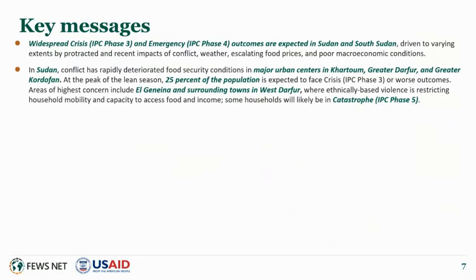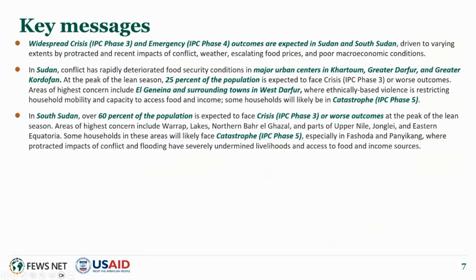Areas of highest concern include El Janina and surrounding towns in West Darfur, where ethnically based violence is restricting household mobility and capacity to access food and income. Some households will likely be in catastrophe IPC phase 5. In South Sudan, over 60 percent of the population is expected to face crisis IPC phase 3 or worse outcomes at the peak of the lean season. Areas of highest concern in emergency IPC phase 4 include Warrap, Lakes, Northern Bargazal, and parts of Upper Nile, Jonglei, and Eastern Equatoria. Some households in these areas will likely face catastrophe IPC phase 5, especially in Fashoda and Panyakan of Upper Nile state, where protracted impacts of conflict and flooding have severely undermined livelihoods and access to food and income sources.